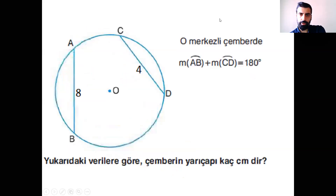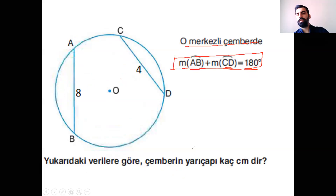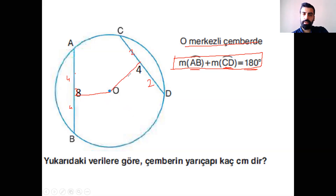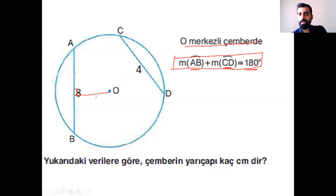Güzel. Demiş ki O merkezi çemberde AB yayı ile CD yayının toplamı 180 derece — işte bu güzel bir bilgi. Burada taşıma yapacağız demektir. Bu yukarıda verilenlere göre çemberin yarı çapı kaçtır? Biz bu haliyle çözüm yapmakta biraz zorlanıyoruz, çünkü ayrı ayrı kirişlerde olduğu için uzunluklar da eşit değil. Kiriş deyince aklıma merkezden buraya bir dikme atmak geliyor. Ama dikme attığım zaman burası 4, burası 4; buna da dikme attım diyelim, burası 2, burası 2. Bundan sonrası gelmiyor çünkü buradaki uzunluklara ulaşamadığım için herhangi bir şekilde beni yarı çapa götürmüyor.